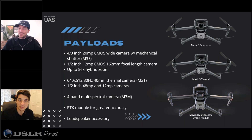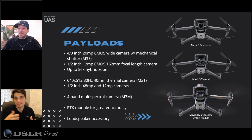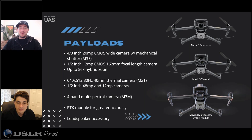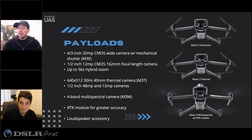We're just referring to it as the Mavic 3 Thermal. But really, when you look at it, it's the Mavic 3 Enterprise suite — so you can have mapping, thermal, or multispectral. And then the last variant shown here has an RTK module, but that RTK module is applicable to all three, correct?